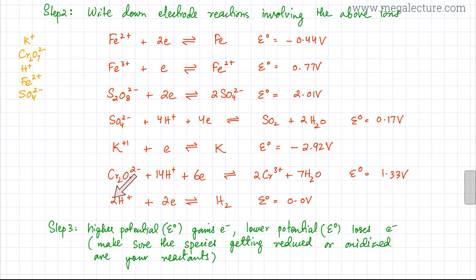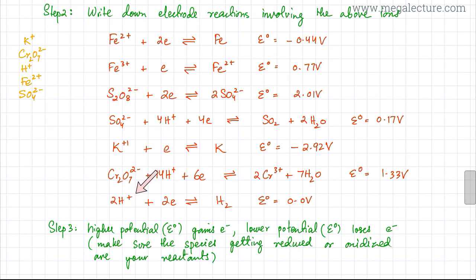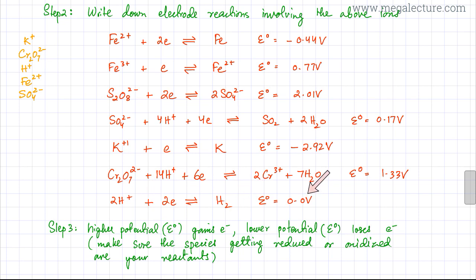The last thing was copying an electrode reaction for H+1. Although the question only states acidified, since H+1 ions are present in the solution, I've written the equation for H+1, which is the standard hydrogen electrode — H+1 gaining electrons to form hydrogen and vice versa. The E0 value for that is 0.0 volts.